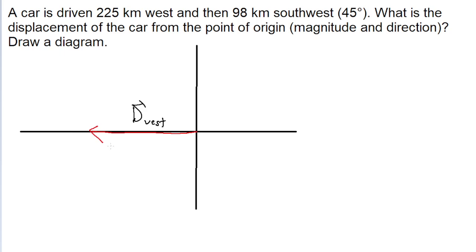Then the car travels 98 kilometers southwest at a 45-degree angle. So from the end of our western arrow, we'll then go in this southwestern direction. And so I'll label this the displacement southwest, SW.